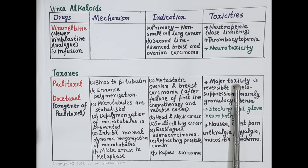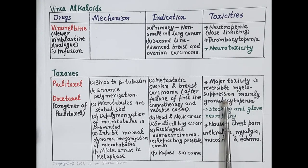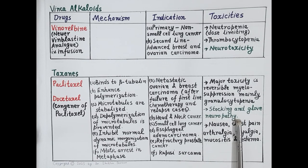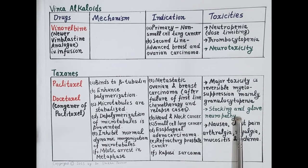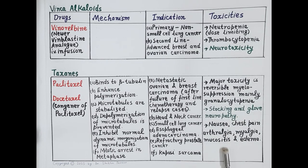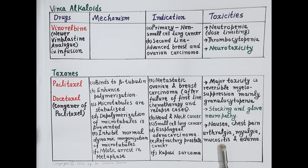Major toxicities of taxanes include reversible myelosuppression, mainly granulocytopenia. They also cause stocking and glove neuropathy — stocking refers to the feet and glove to the hands — meaning these drugs can cause nerve damage affecting the feet and hands. Other toxic effects include nausea, chest pain, arthralgia, myalgia, mucositis, and edema.